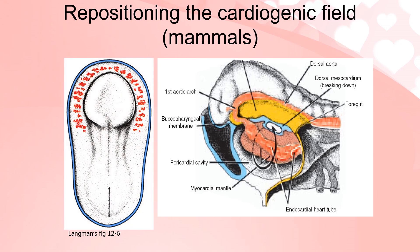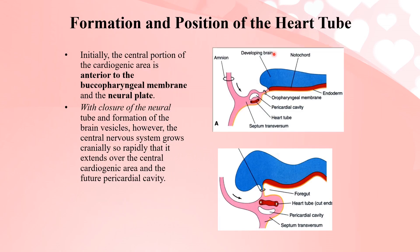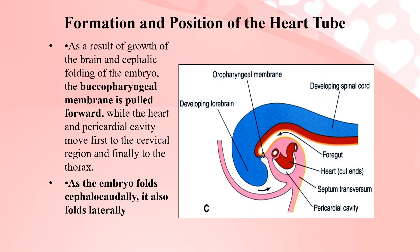This diagram shows the flat embryonic presomitic embryo with the horseshoe-shaped cardiogenic area. Initially, the central portion of the cardiogenic area is anterior to the buccopharyngeal membrane and neural plate. With closure of the neural tube and formation of brain vesicles, the central nervous system grows cranially so rapidly that it extends over the central cardiogenic area and the future pericardial cavity.